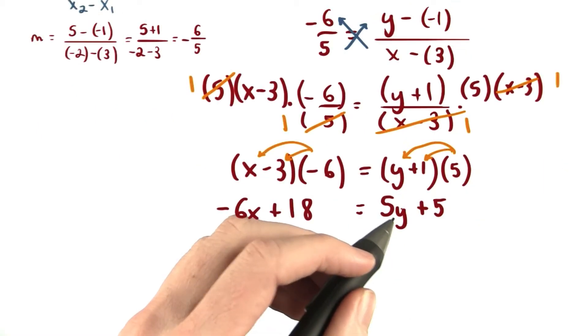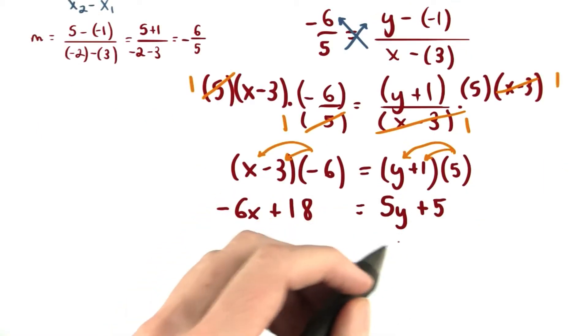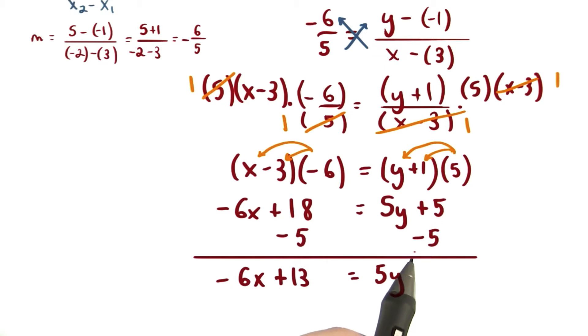Our goal here is to get y by itself, so let's isolate this 5y term. We can subtract 5 from both sides to get negative 6x plus 13 equals 5 times y, and then we divide both sides of our equation by 5.